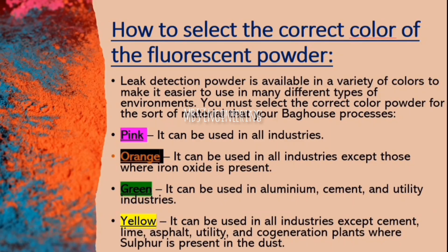Now, how to select the correct color of fluorescent leak detection powder. Leak detection powder is available in a variety of colors to make it easier to use in many different types of environments. You must select the correct color powder for the sort of material that your bag house processes. Pink color can be used in all industries. Orange color can be used in all industries except those where iron oxide is present. Green color can be used in aluminum, cement, and utility industries. Yellow color can be used in all industries except cement, lime, asphalt, utility, and cogeneration plants where sulfur is present in the dust.